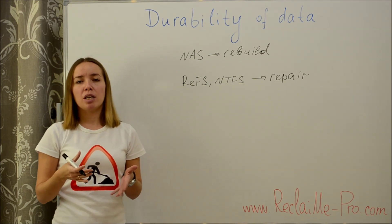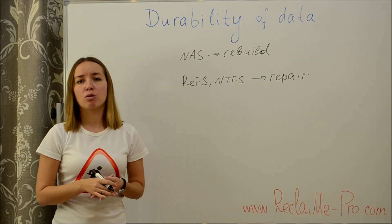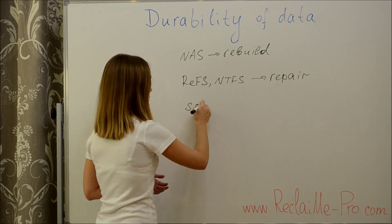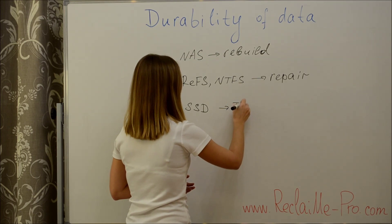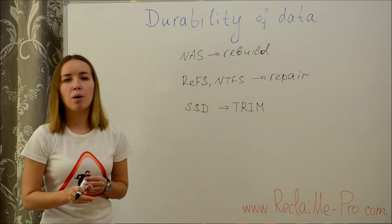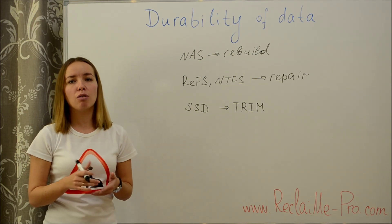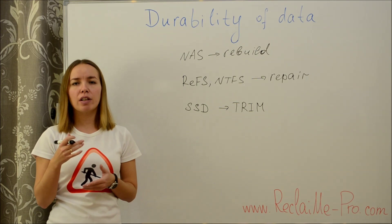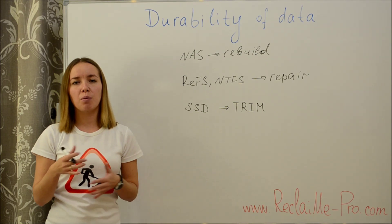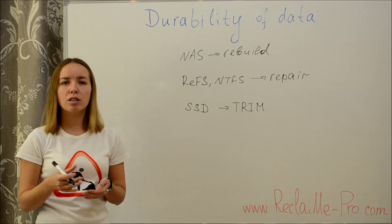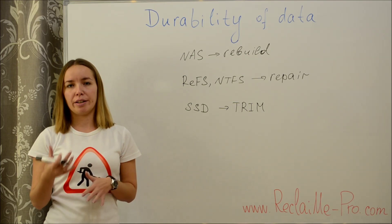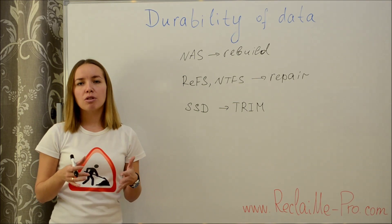Any modern solid state drive is capable of TRIM, which erases data irreversibly when a file system tells the drive that it no longer needs the data. The actual cleanup happens when the drive is idle, but this is pretty quick anyway because there are no mechanical parts in a solid state drive and it can quickly switch between full load and idle.